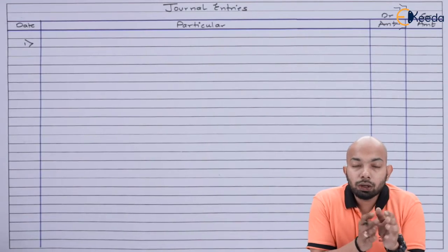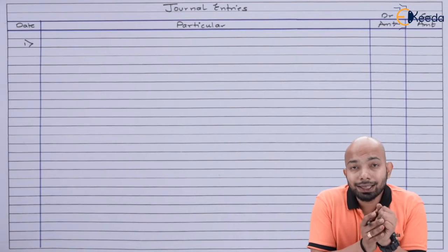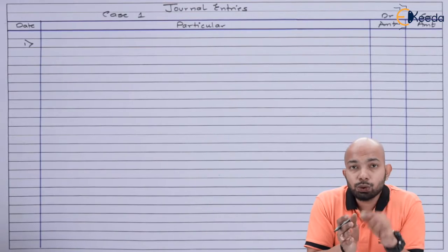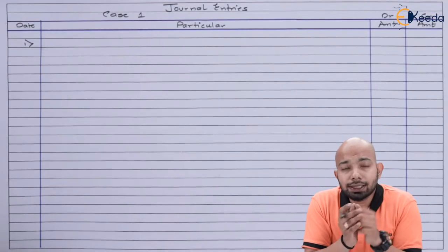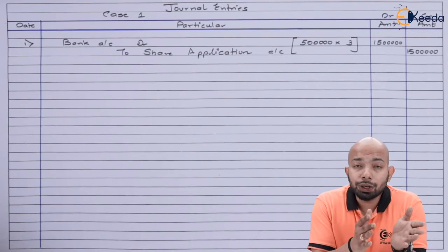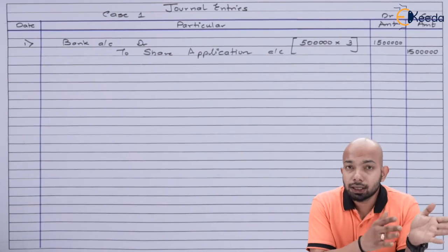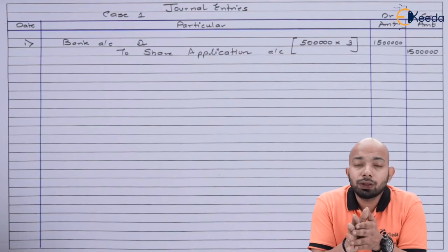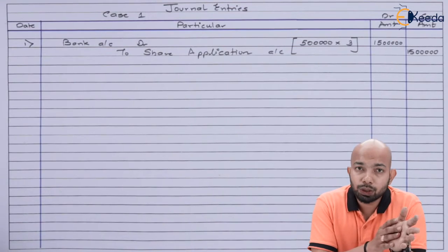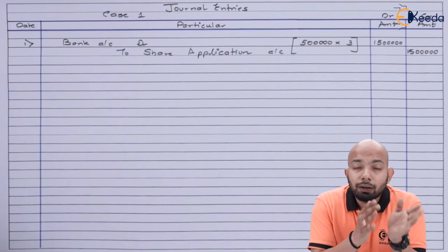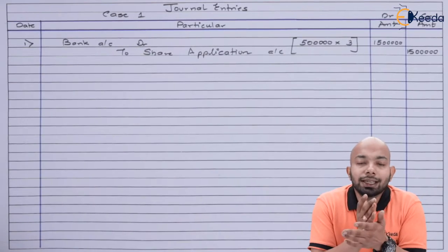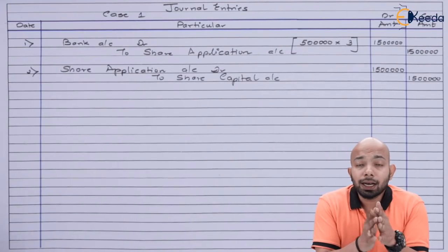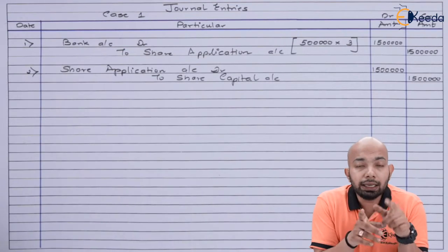Now for Case 1 — Umber Limited — we'll discuss all journal entries starting with the application money. The issue was made for 5 lakh shares. Since the question doesn't mention over-subscription or under-subscription, we assume it was at par. The application money transferred to share capital is ₹15 lakh, that is 5 lakh shares multiplied by ₹3 per share. The application entry has been passed.